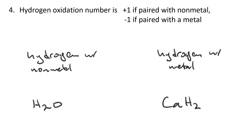With hydrogen, the oxidation number depends on whether the other element in the compound is a metal or a nonmetal. If the other element is a nonmetal, as in water (H₂O), then hydrogen is less electronegative and gets the oxidation number plus one. On the other hand, if the other element is a metal, as in calcium hydride, hydrogen is more electronegative than calcium, gets the bonding electrons, and its oxidation number is minus one.